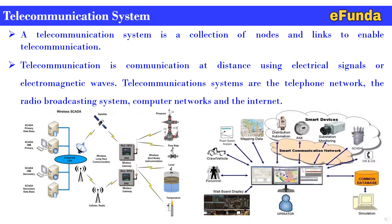In wireless SCADA communication, the corporate LAN is connected from field signals on an offshore platform where pressure, flow rate, level, and temperature are communicated to the PLC/RTU system. From the RTU system, via satellite communication, it reaches the corporate LAN where the SCADA primary database, SCADA HMI primary, SCADA HMI secondary, and SCADA secondary database are located. This is how the communication system works.